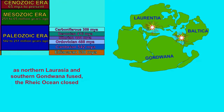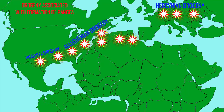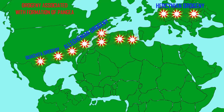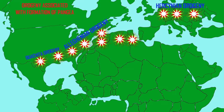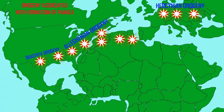Finally, as the supercontinent Pangea formed and the Rheic Ocean finally closed, there were separate orogenic events in Europe, along the Appalachian region of North America, and then also in the southeast of North America, as the supercontinents collided.